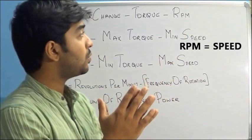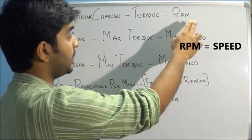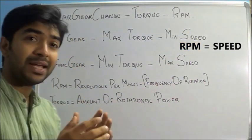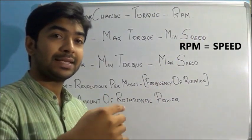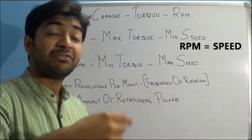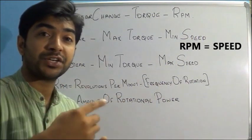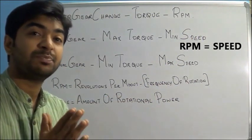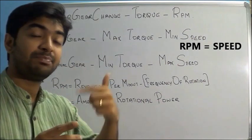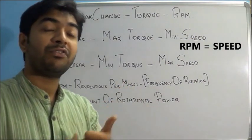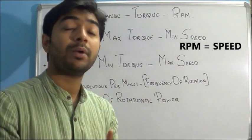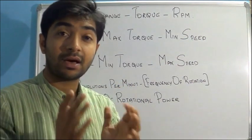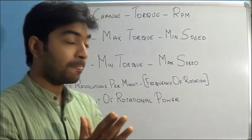So what is RPM? RPM is simply revolutions per minute — it's the frequency of rotation, or the speed of an engine per minute.